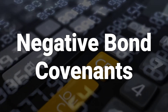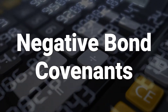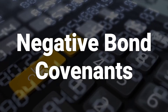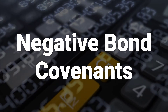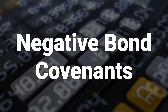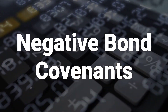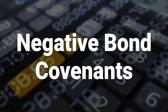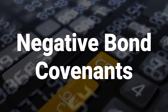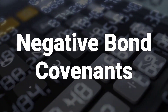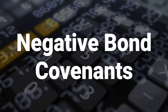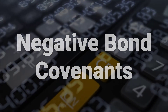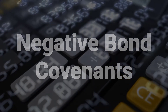Negative or restrictive bond covenants are put in place to make issuers refrain from certain actions that could result in the deterioration of their credit standing and ability to repay existing debt. Financial ratios that an issuing firm must maintain and interest coverage ratios are common forms of negative covenants.